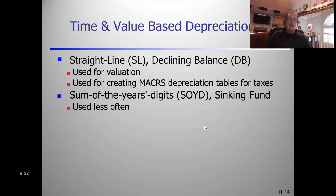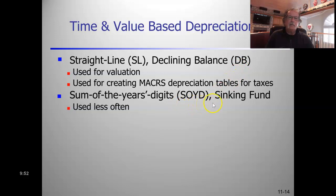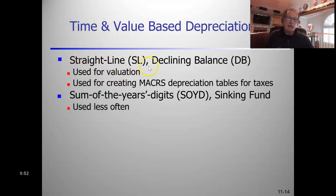The classical methods of computing depreciation are straight line, declining balance, and sum of years digits. MACRS depreciation is a combination of declining balance and straight line. I'm going to skip over declining balance and sum of years digits because you're not going to be using those in industry - you're not accountants. Straight line and MACRS are what we're going to be most concerned about.